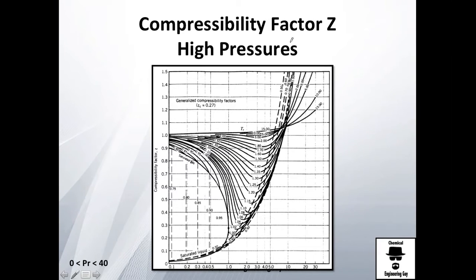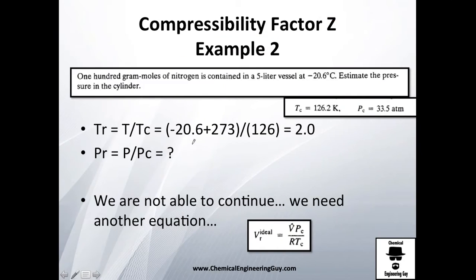In the last video we saw high pressures for the compressibility factor. Let's do a little exercise. We have 100 gram moles of nitrogen contained in a 5 liter volume at this temperature. Simply estimate the pressure in that cylinder.